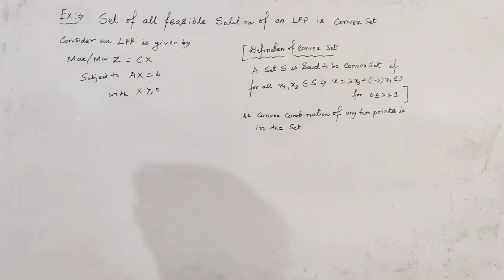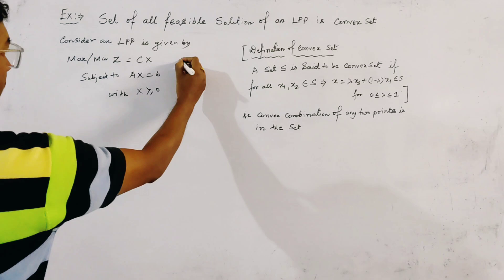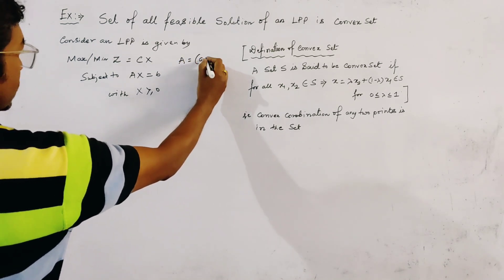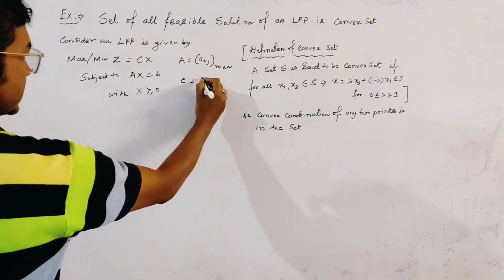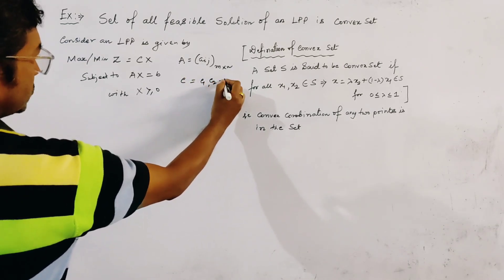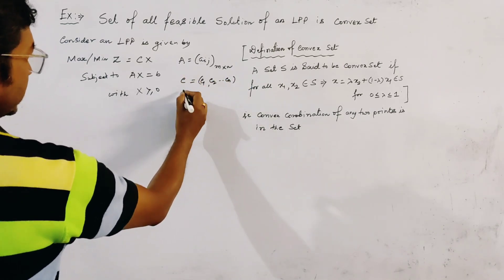This is the LPP in matrix method. And we all know where A, this is coefficient matrix, M cross N, C, this is C1, C2, Cn,